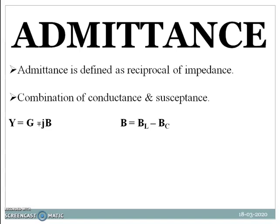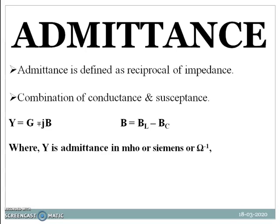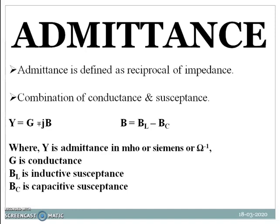Just as there are two types of reactance — inductive and capacitive — there are also two types of susceptance: inductive susceptance and capacitive susceptance. Overall susceptance B equals B_L minus B_C, where B_L is inductive susceptance and B_C is capacitive susceptance. Admittance Y is measured in mho, Siemens, or ohm inverse.